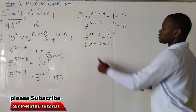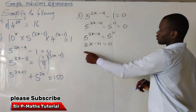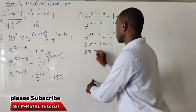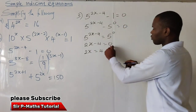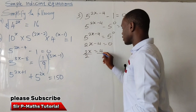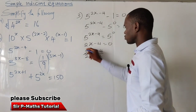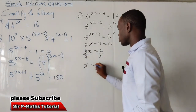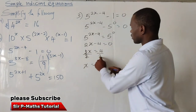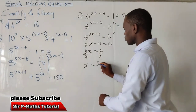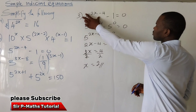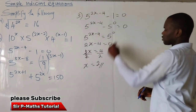Equating the powers: 2x minus 4 equals 0. Making x the subject: 2x equals 4. Dividing both sides by 2, x equals 2. So the value of x for this equation is 2.